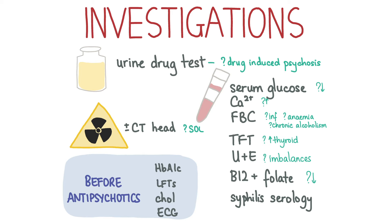Syphilis serology should be done, and a urine drug test should also be carried out as substance misuse can cause psychotic symptoms. You may also consider requesting a CT scan or EEG if there is clinical suspicion of a space-occupying lesion or temporal lobe epilepsy respectively.